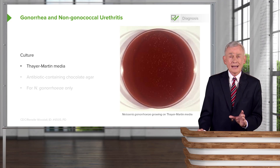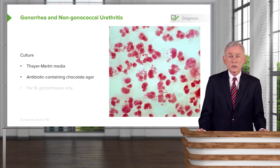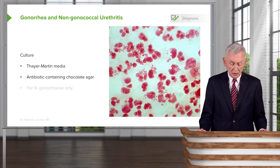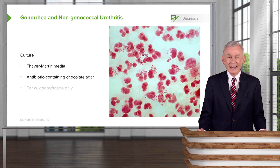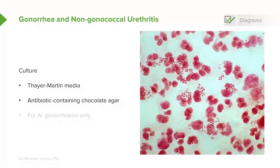We're only interested in isolating Neisseria gonorrhoeae, so how do we get rid of the other organisms that might grow? We put antibiotics into the medium. For example, vancomycin — which is broad spectrum for gram-positive organisms — so no gram-positives should grow on Thayer-Martin. Colistin is also added, a broad-spectrum gram-negative antibiotic effective against gram-negative rods like E. coli and Pseudomonas. Finally, nystatin, an antifungal agent, keeps the growth of yeast and other fungi away.